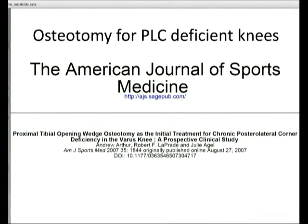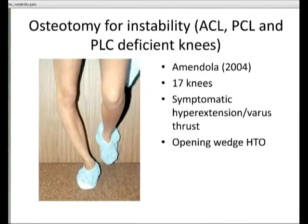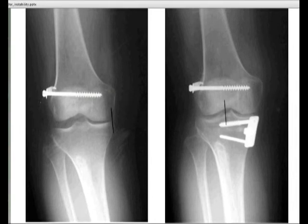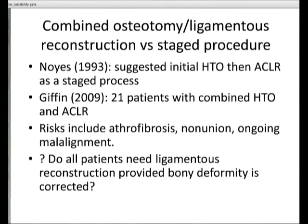The question is: do you perform it as a staged procedure — particularly when dealing with ACL and medial compartment arthritis — doing HTO first and then deciding if ligamentous reconstruction is required? Or do you do it all at once? Noyes is a real advocate for initial HTO followed by the ligamentous procedure. Giffen prefers to combine HTO with ligamentous reconstruction, though this does carry risk of arthrofibrosis, non-union, and if you start with malalignment, you'll stretch the graft and it will fail.